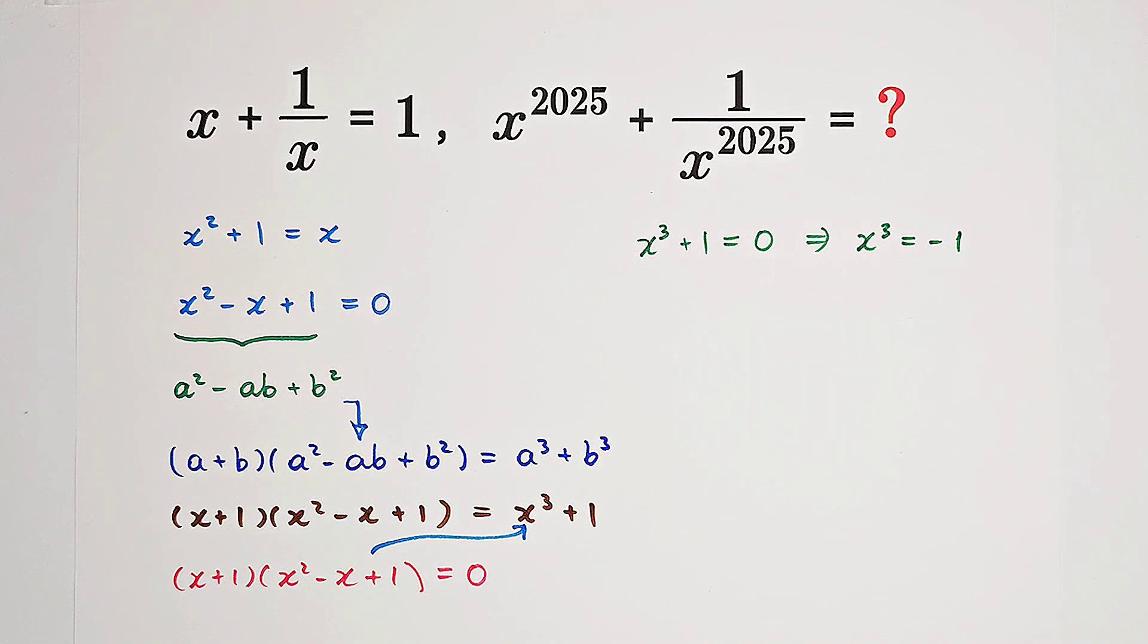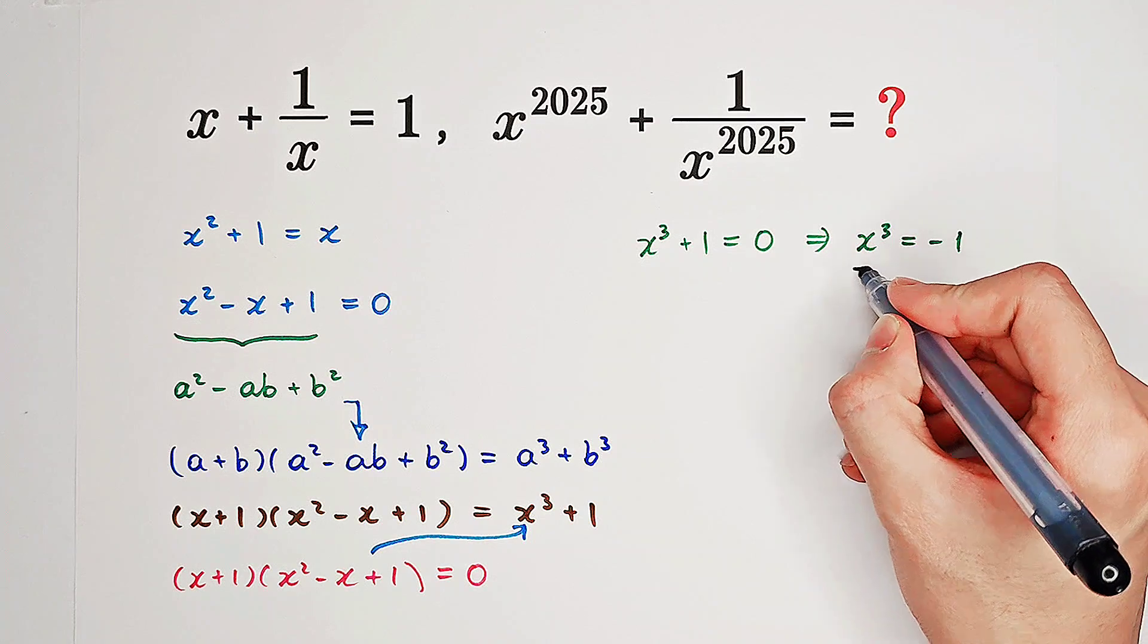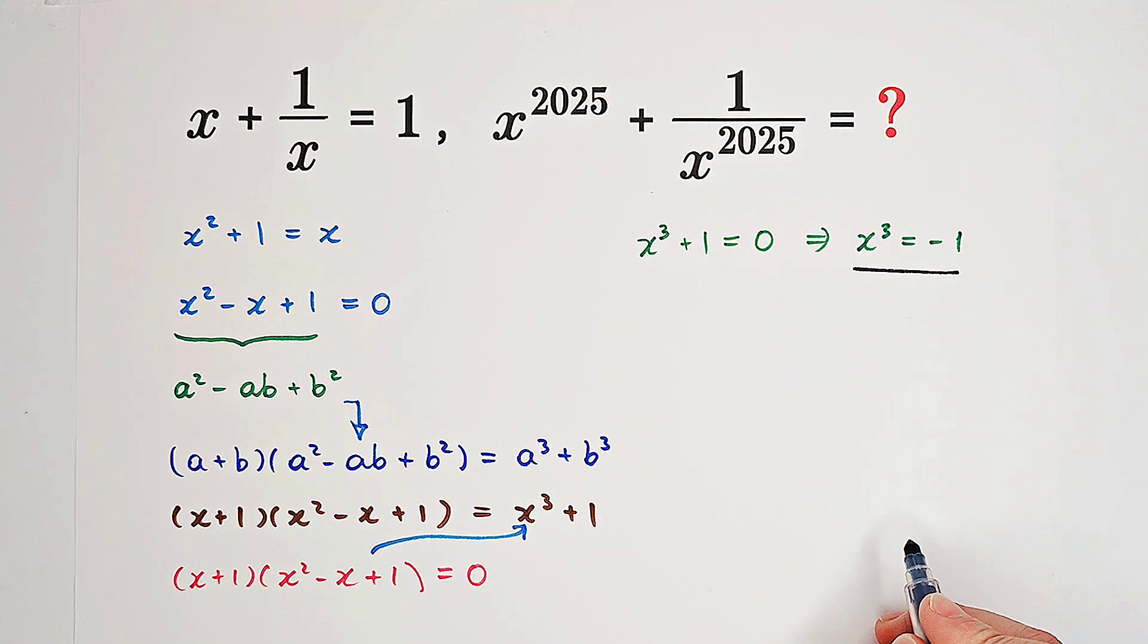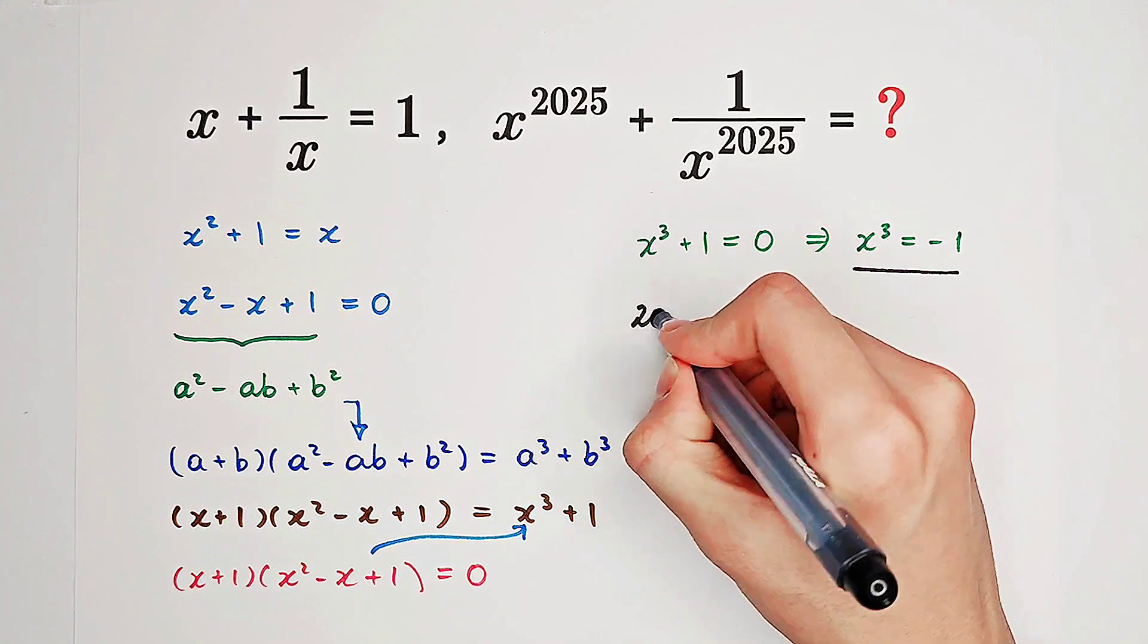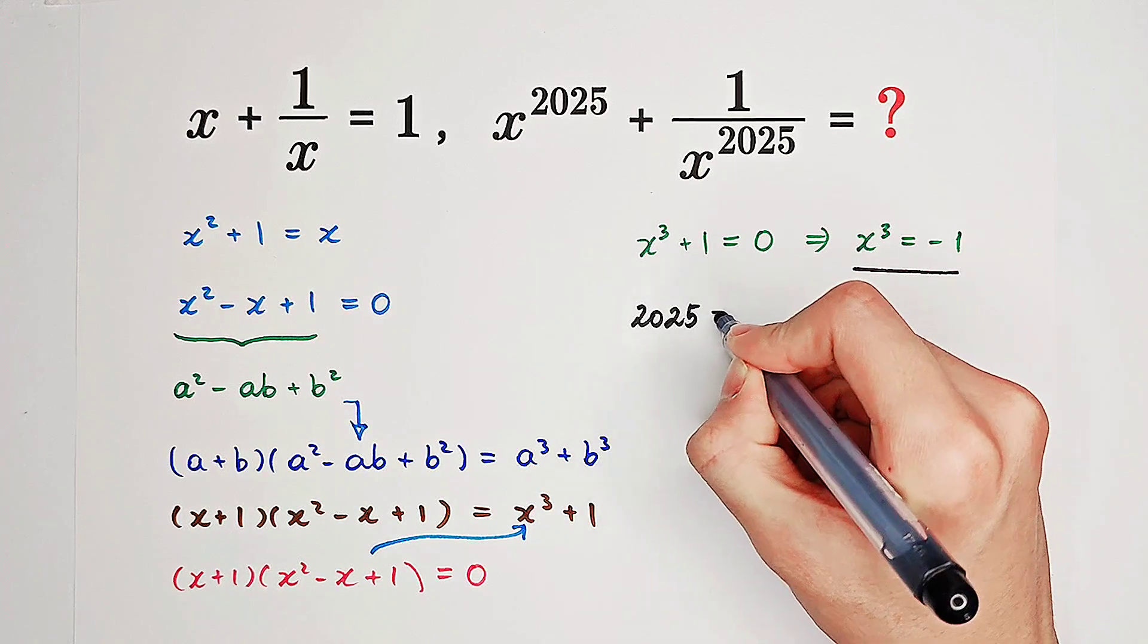Since x cubed is negative 1, and this is very nice, why? Because, notice, 2025 is a very nice number.